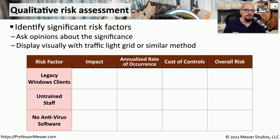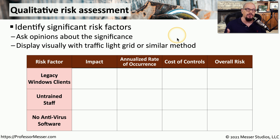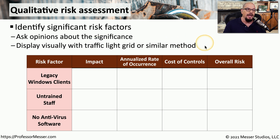Sometimes it's difficult to put a number or a value on how risky something might be. Instead, you could use a qualitative risk assessment to get a better understanding of where you sit with a particular risk. You may want to get opinions from others on how they feel this particular risk is in your environment, and then you can use things like colors to determine how risky something might be. For example, we might want a qualitative analysis of the risk of having legacy Windows clients in our environment.